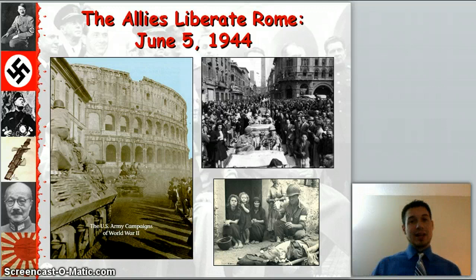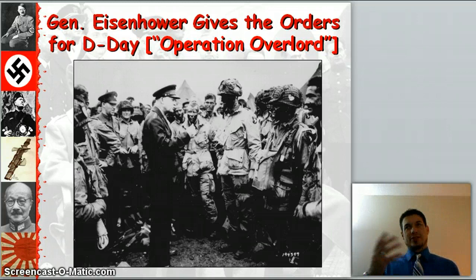Then we go straight into Rome. June 5, 1944, the Allies liberate Rome, and now Italy is under the control of the Allies. Mussolini gets strung up in the square — him and his mistress — by the Italian people.